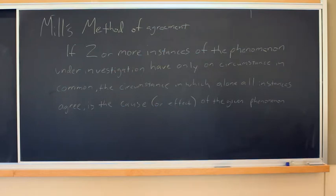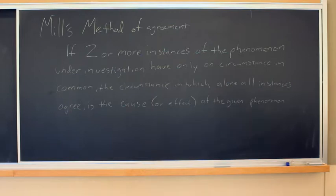Mill's method of agreement: if two or more instances of the phenomenon under investigation have only one circumstance in common, the circumstance in which alone all instances agree is the cause or effect of the given phenomenon.